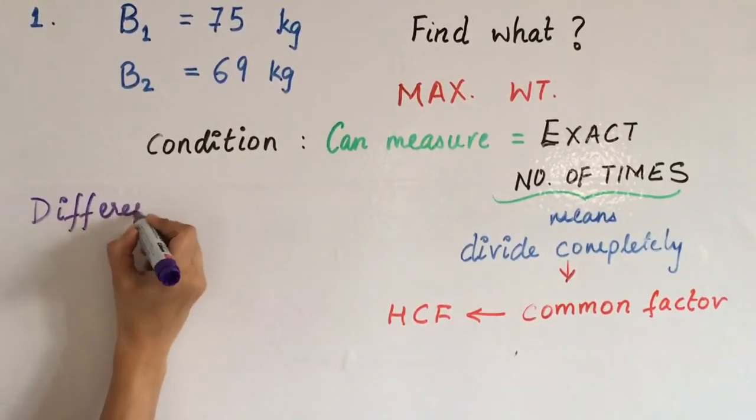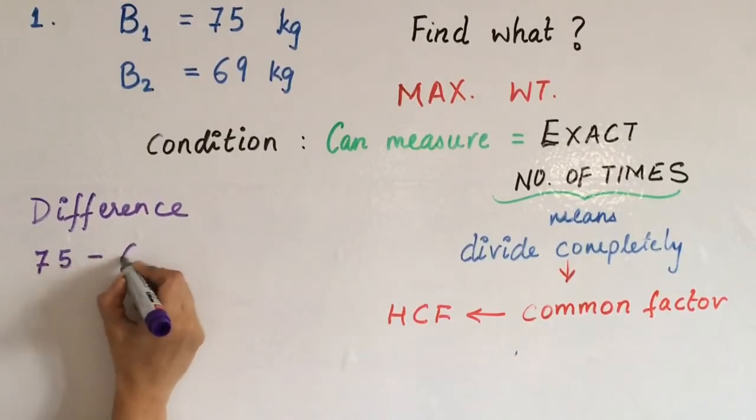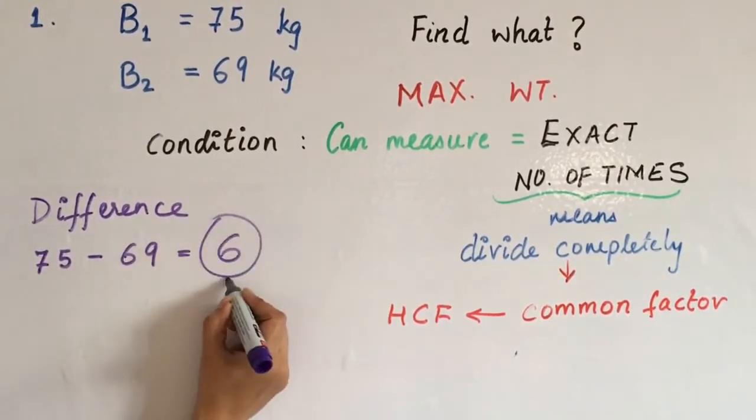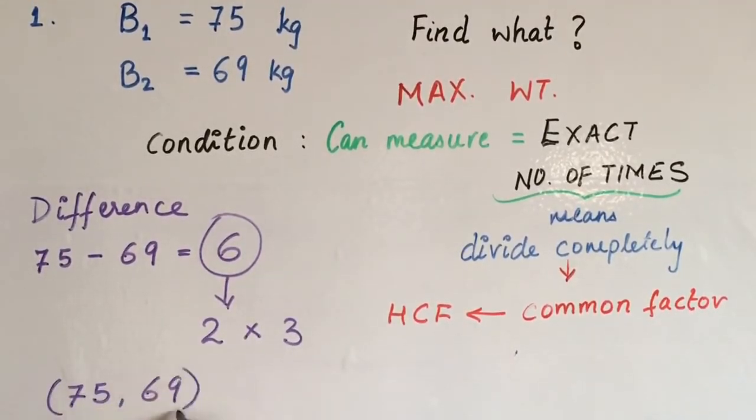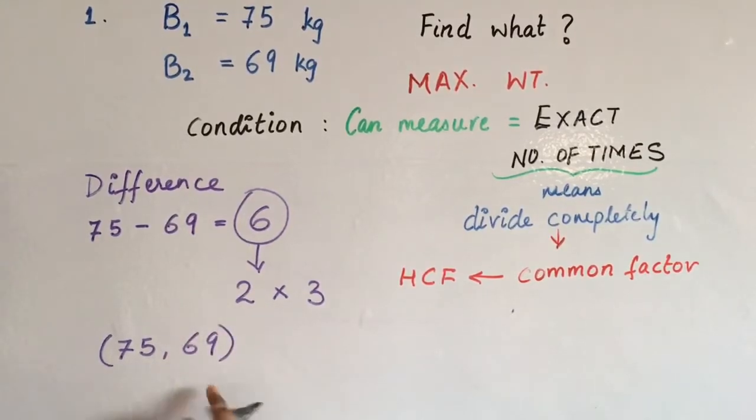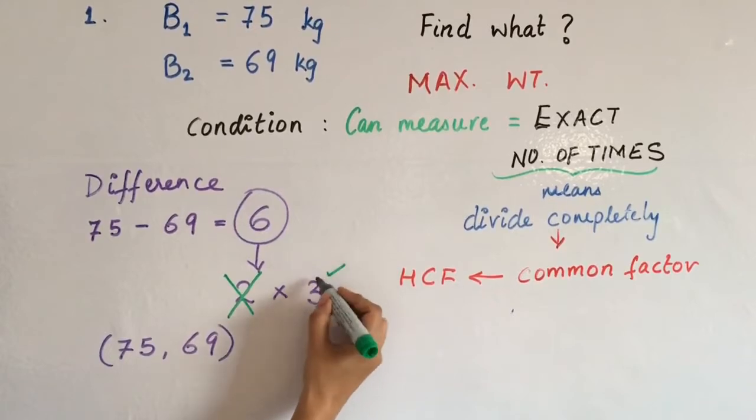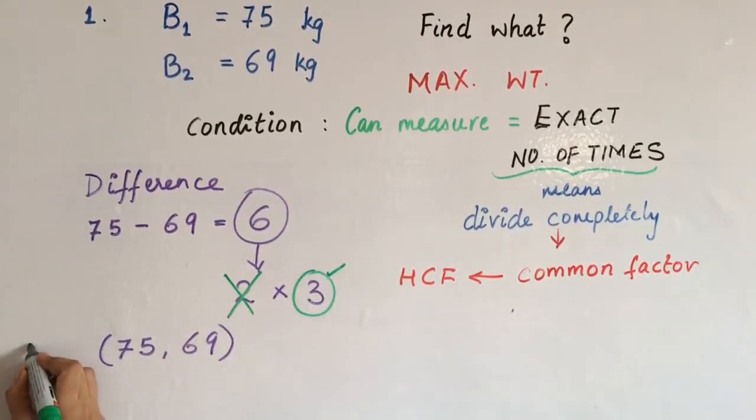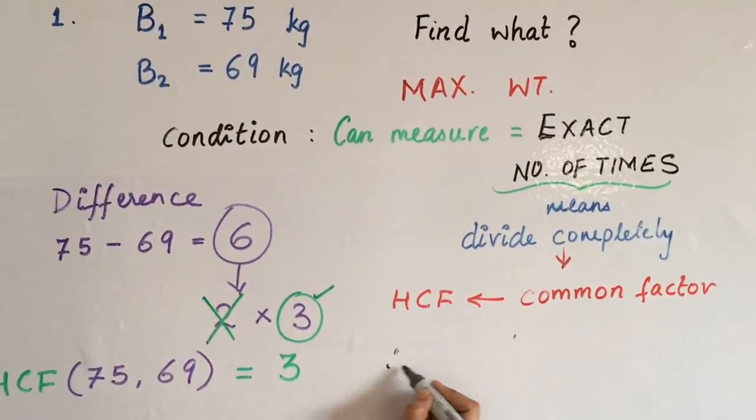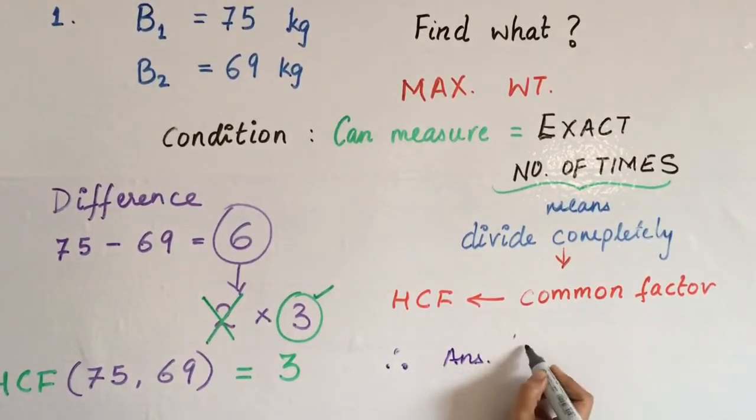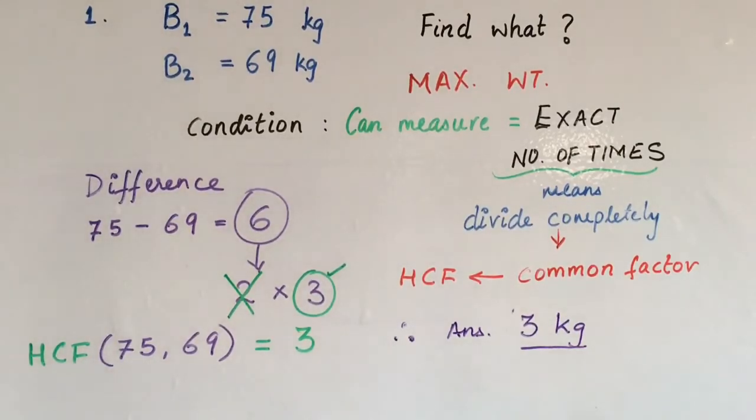Using the difference method, we will take HCF. 75 minus 69 will give you 6. Six factors are 2 times 3. Now check, 2 and 3, which number divides 75 and 69? Clearly we can see 2 does not divide. So we will ignore 2. Let's check 3, so 3 divides both the numbers. Therefore 75 and 69 are divided by 3. Therefore HCF is also 3. That is, 3 kg will be the weight of the fertilizer which divides both weights exact number of times, completely divided.